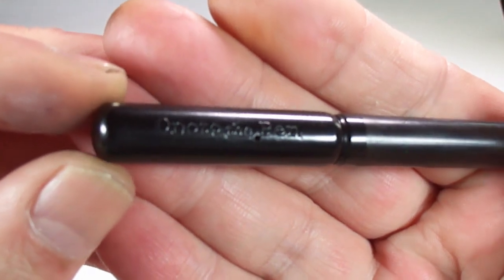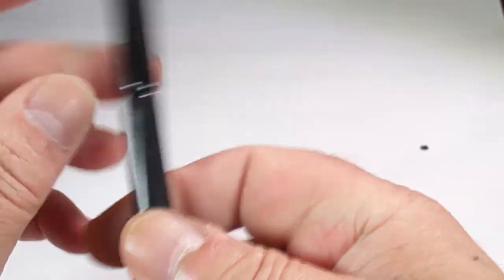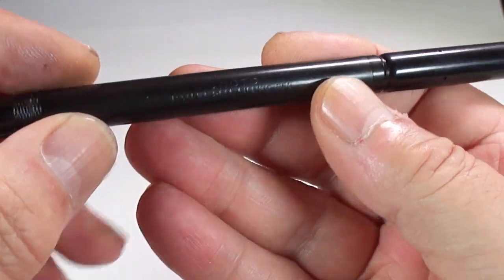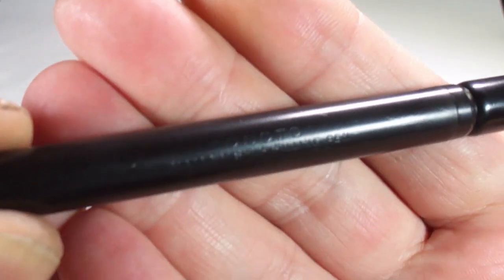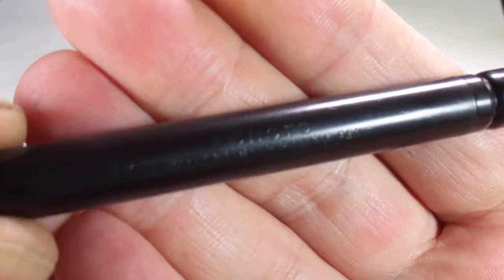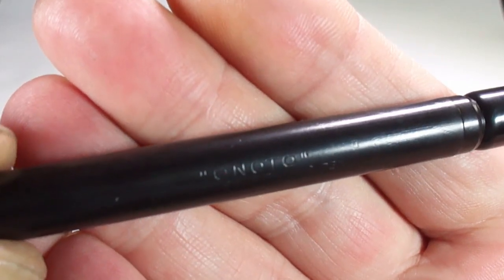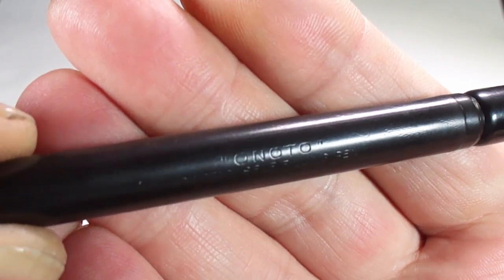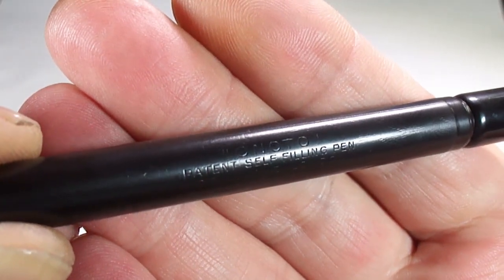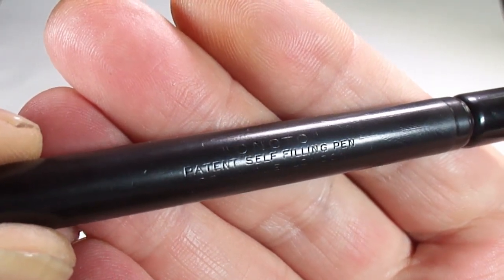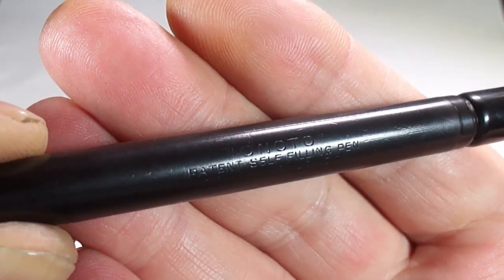If we take you to the barrel imprint, it's not as pronounced as the cap one, but you can see it says 'A noto patent self filling pen' and underneath it has 'Delarue London.'